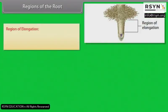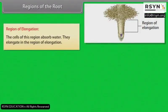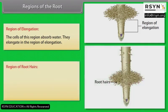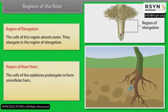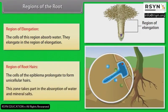Region of elongation: The cells of this region absorb water and elongate in the region of elongation. Region of root hairs: The cells of the epiblemma elongate to form unicellular hairs. This zone takes part in the absorption of water and mineral salts.